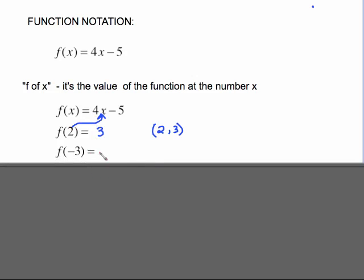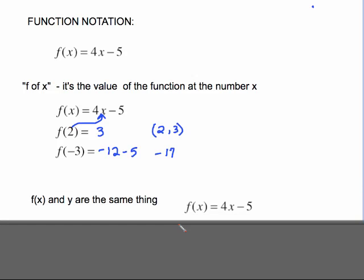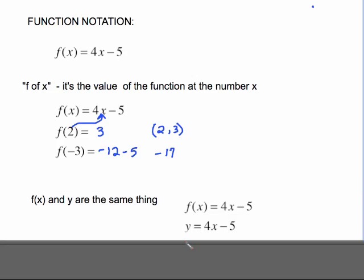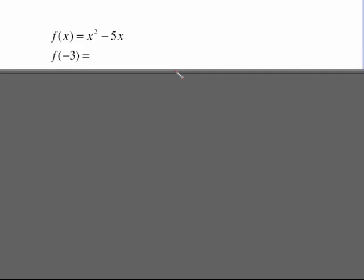Another one, put negative 3 in here. 4 times negative 3 is negative 12. Negative 12 minus 5 is negative 17. Keep in mind something important. f of x and y are the same thing. So when you see f of x equals 4x minus 5, if you're not real happy with the f of x, you could think about it being y. Let's take a look at another one. Plug negative 3 in here. Negative 3 squared is 9. Negative 5 times negative 3 is a positive 15. Add those up gives me 24. So there was an input of negative 3 and output of 24. Negative 3 is a member of the domain. 24 is a member of the range.